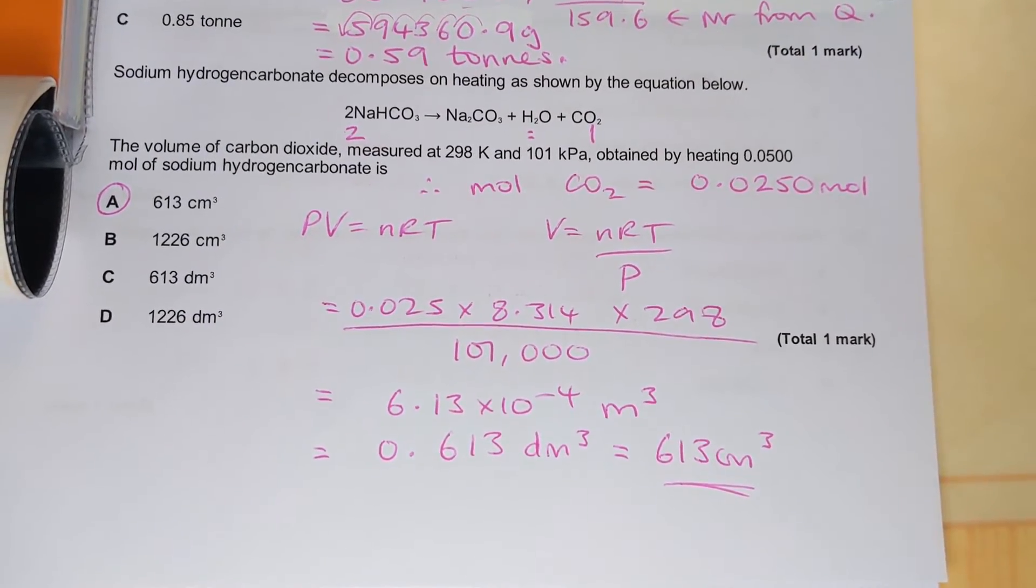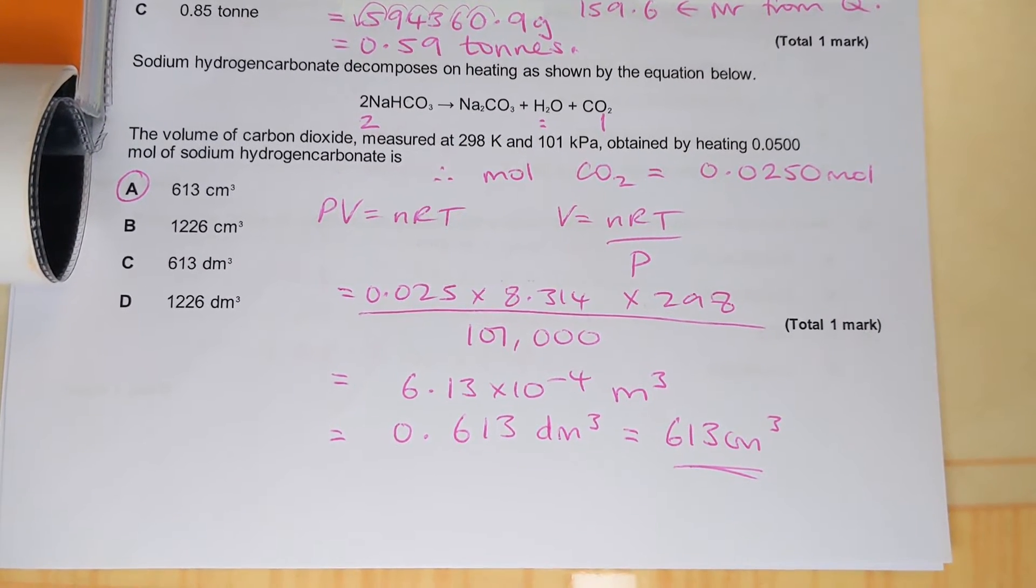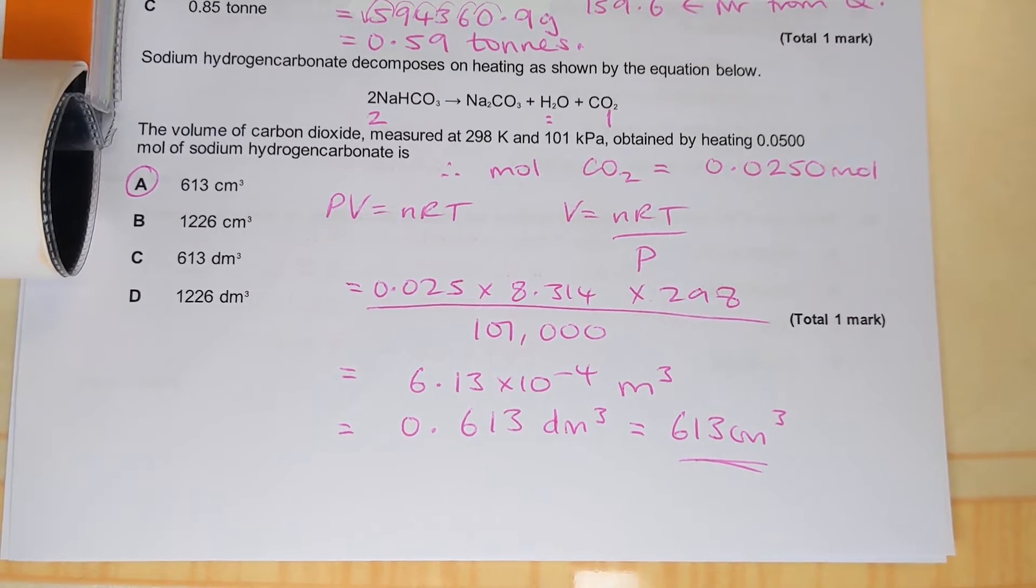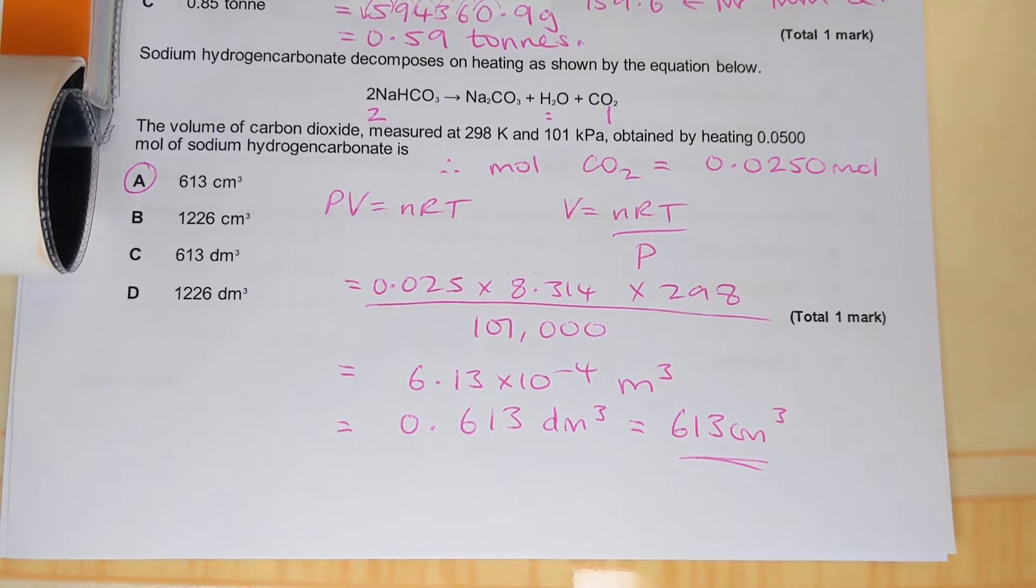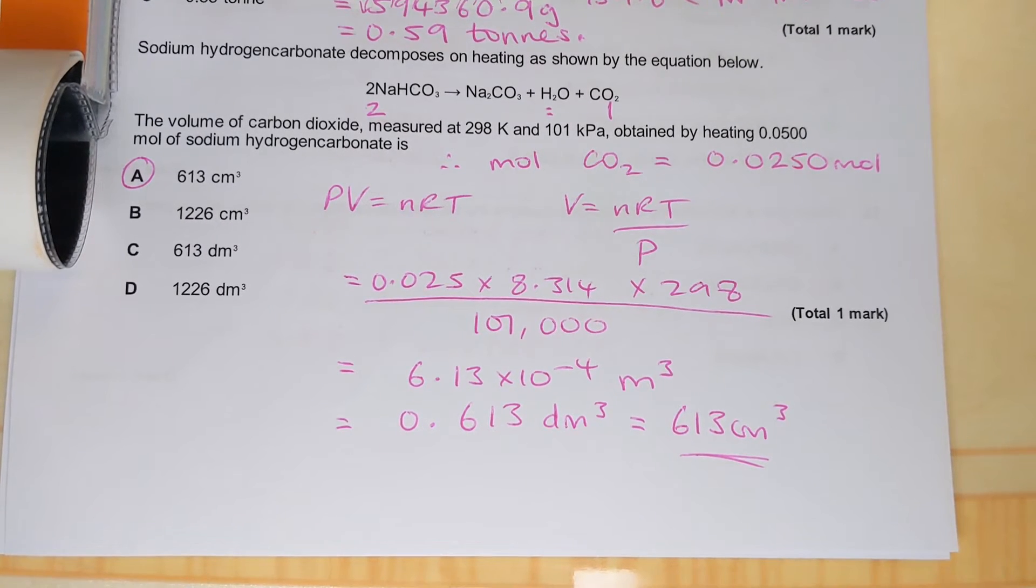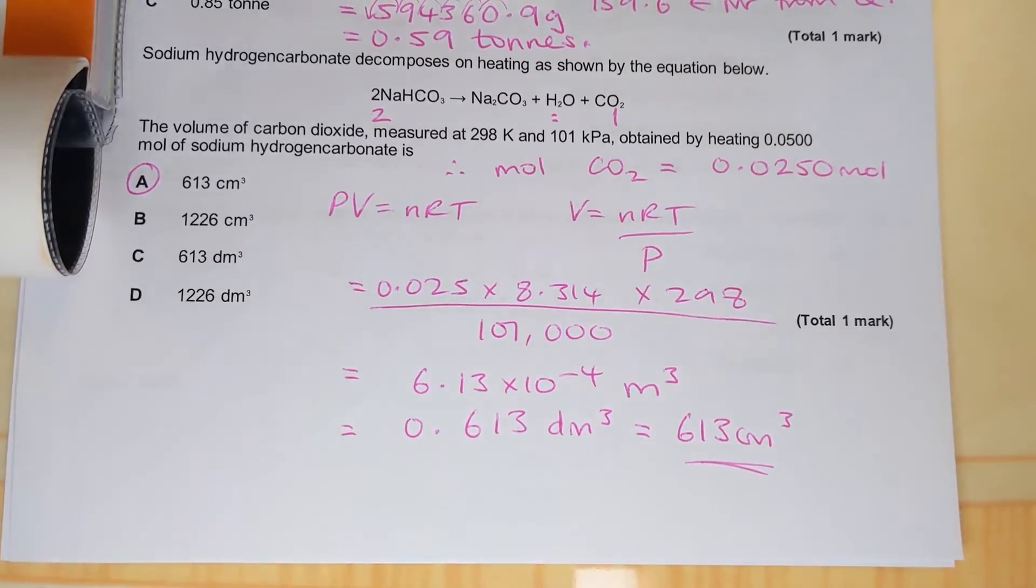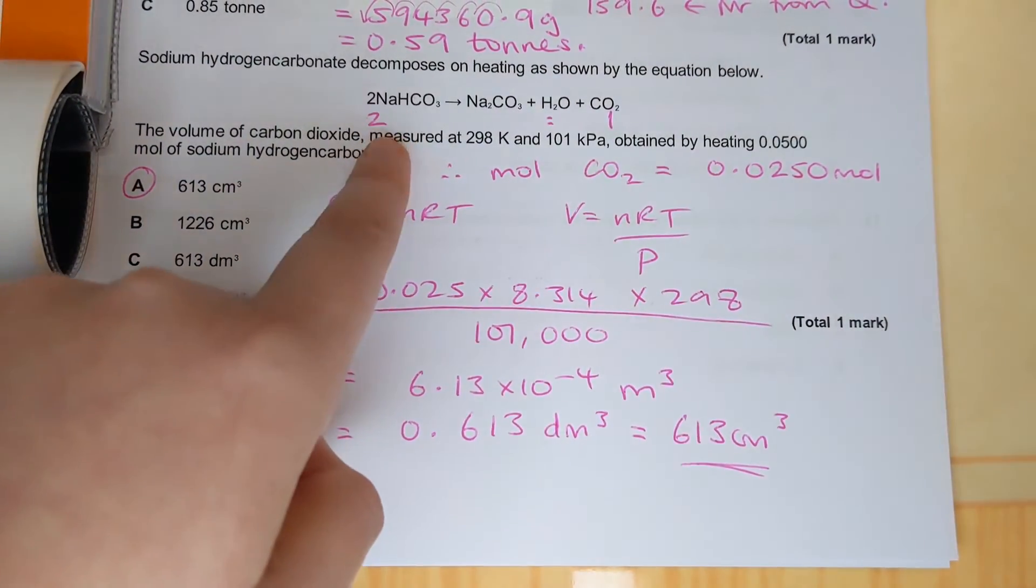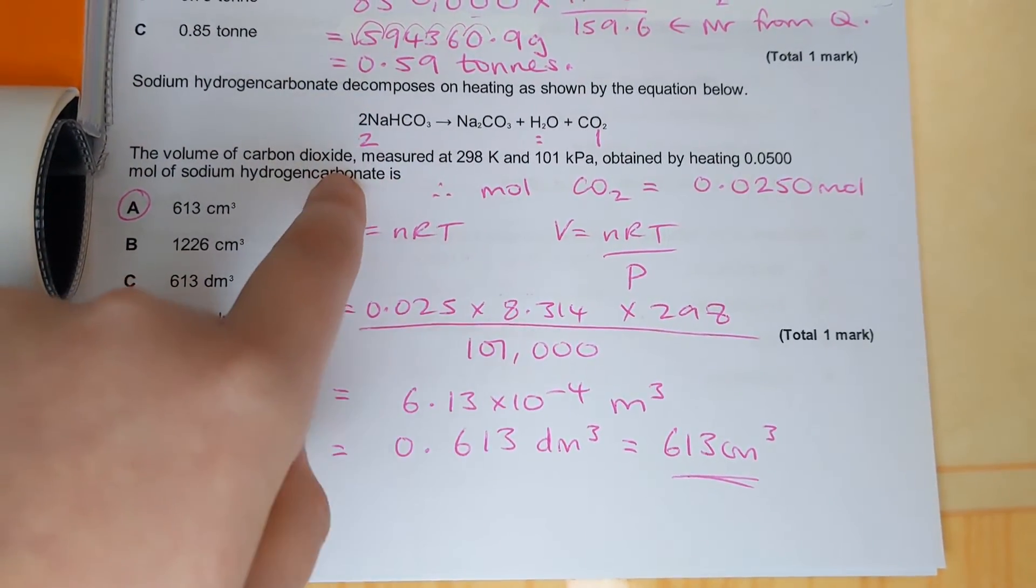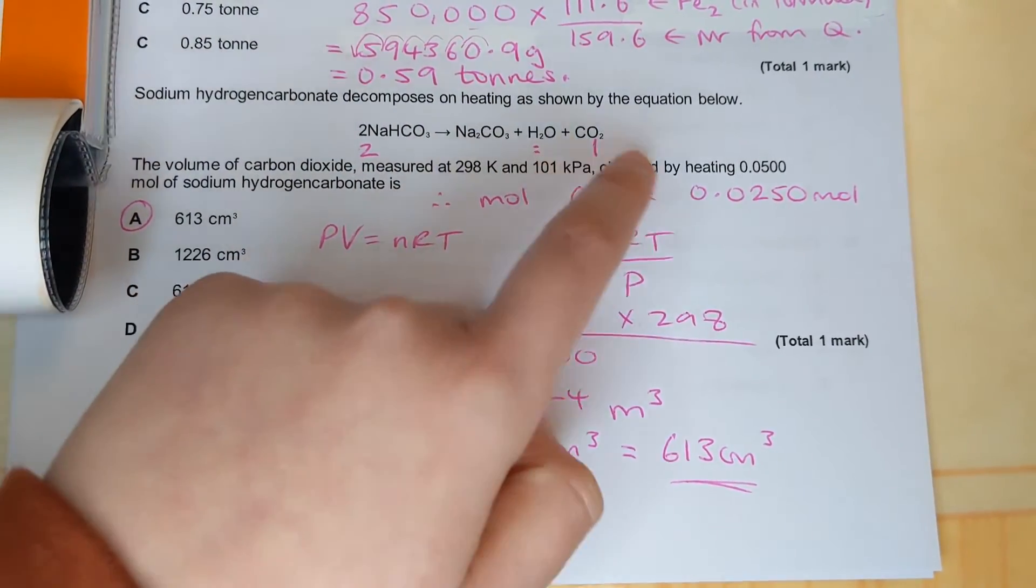And the last question it says sodium hydrogen carbonate decomposes on heating as shown by the equation below. The volume of carbon dioxide measured at 298 kelvin and 101 kilopascals obtained by heating 0.05 moles of sodium hydrogen carbonate is. So we're given moles of sodium hydrogen carbonate and we've got a balanced equation for a reason.